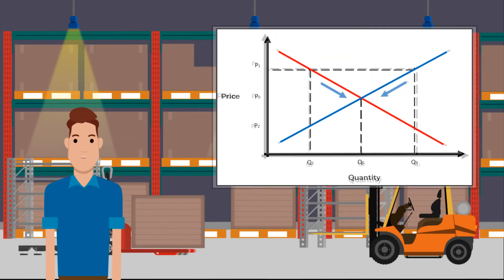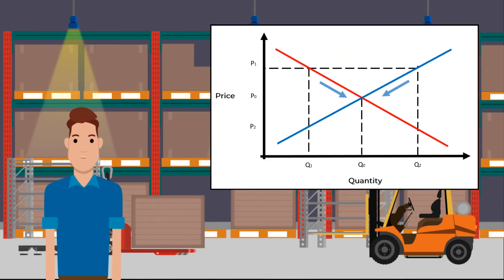When the market price is higher than the market equilibrium, supply exceeds demand. There is downward pressure on the market price as people are not willing to pay the higher price, and suppliers will accept a lower price to get rid of their stock. This is excess supply.